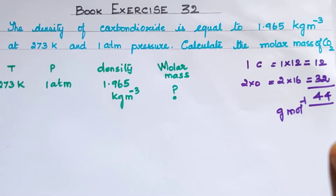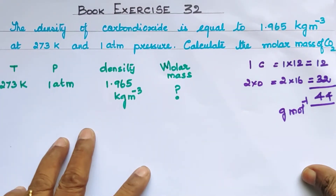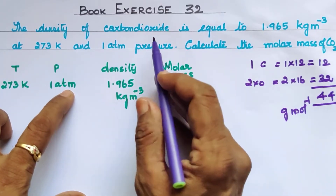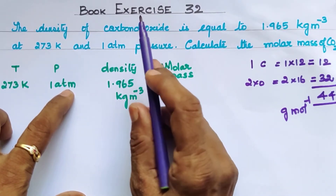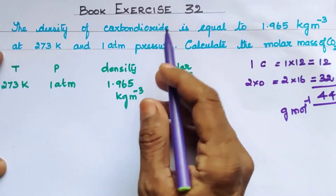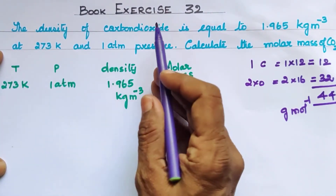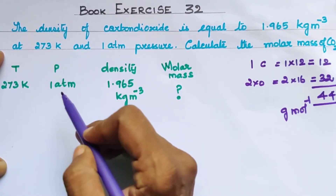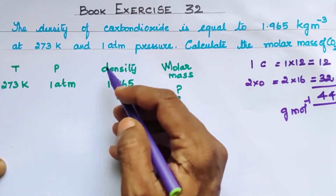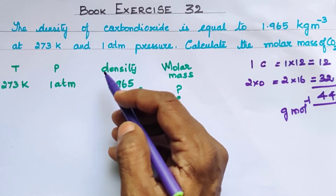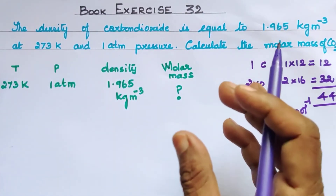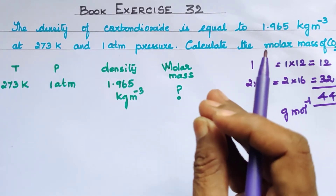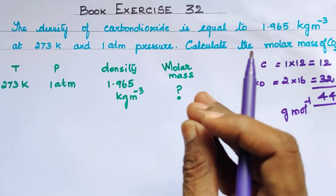Now, the question is how to solve the problem. The condition is 273 Kelvin and 1 atm pressure. Carbon dioxide is one gas. If you relate this — one gas at temperature 273 Kelvin and 1 atm pressure — it is related to one definition, which is molar volume. Molar volume is the volume occupied by one mole of any gas at STP, which is the standard conditions.